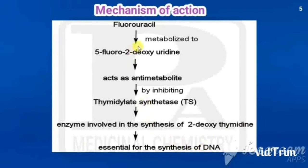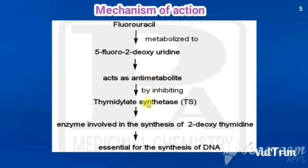5-Fluorouracil is metabolized into 5-fluoro-2-deoxyuridine, which acts as an anti-metabolite by inhibiting thymidylate synthase. By inhibiting this enzyme, DNA synthesis is inhibited.